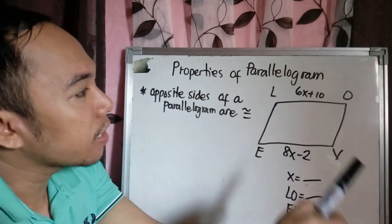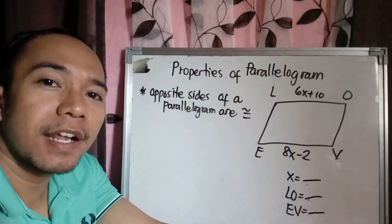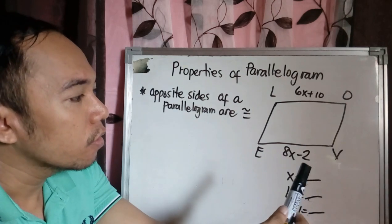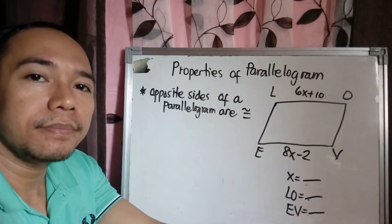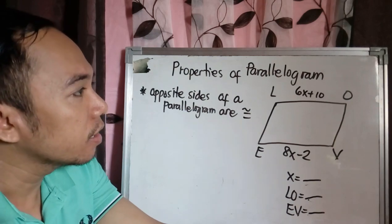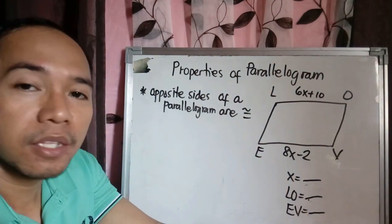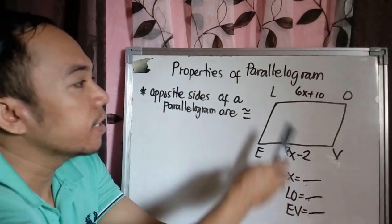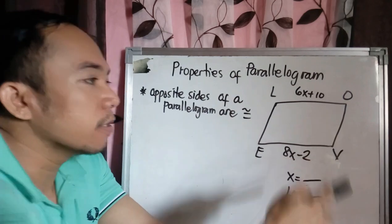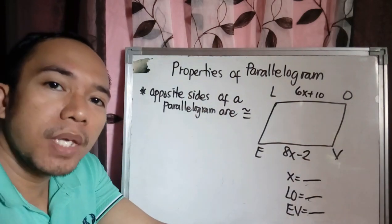So I have here parallelogram. The name of our parallelogram is love. L-O-V-E. So here, our opposite sides are L-O opposite to E-V and L-E opposite to O-V. So what does it mean?